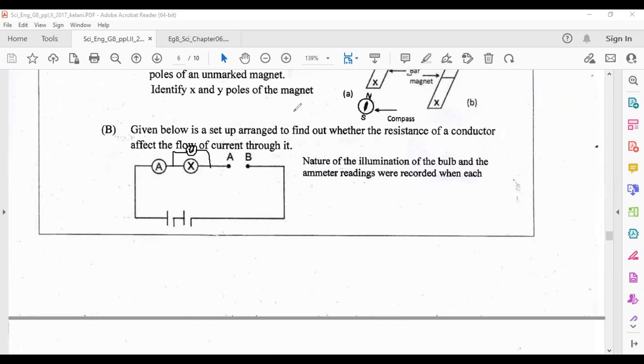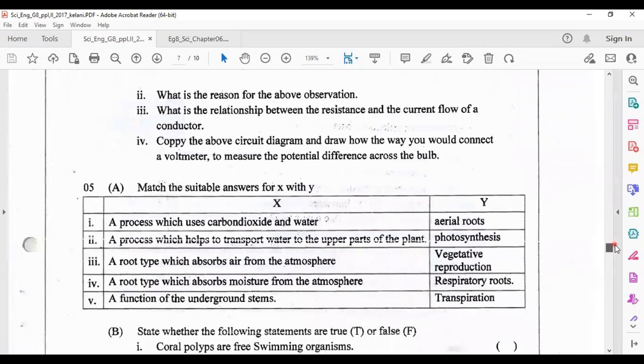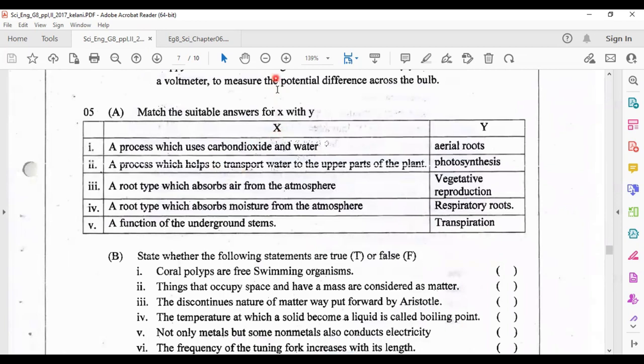Question 5: match the suitable answers for X and Y. A process which uses carbon dioxide and water: answer photosynthesis. A process which helps to transport water to the upper part of the plant: it is transpiration. A root type which absorbs air from the atmosphere: answer is respiratory roots. A root type which absorbs moisture from the atmosphere: aerial roots. A function of the underground stems: vegetative reproduction.